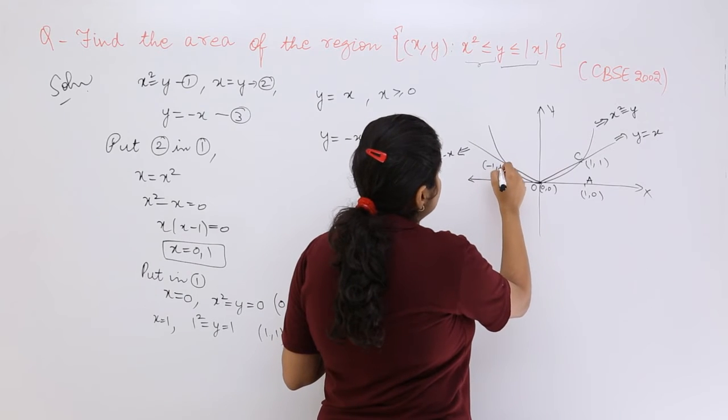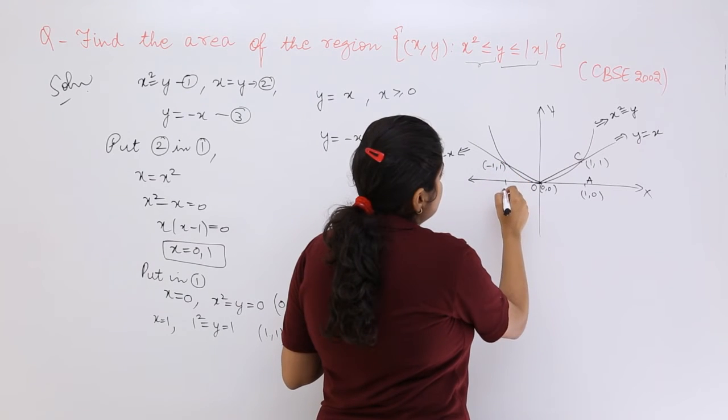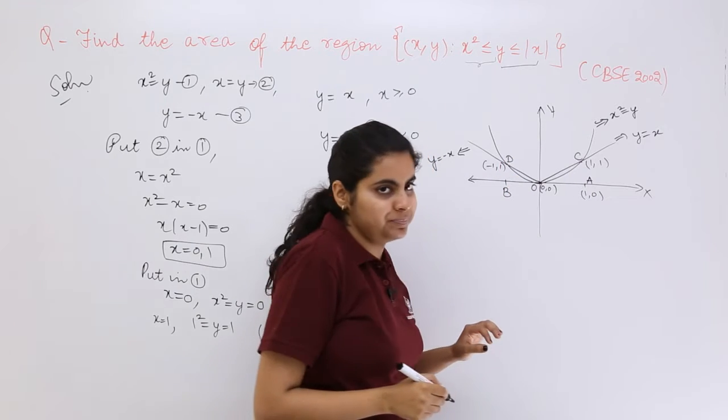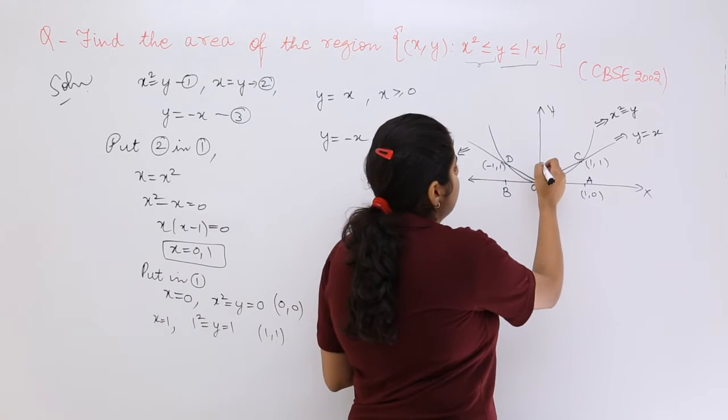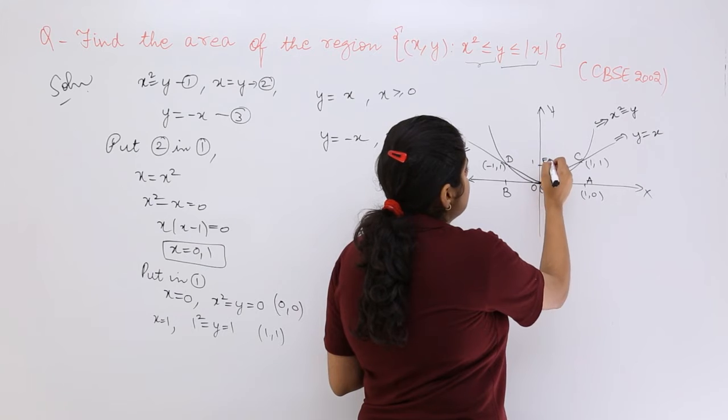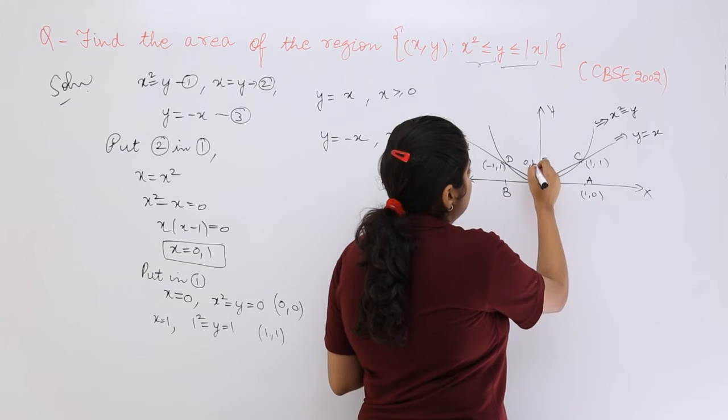That will come out to be (-1,1). That means I can name this point as A and this point as D. And this should be 1 which can be named as point E, which is (0,1).